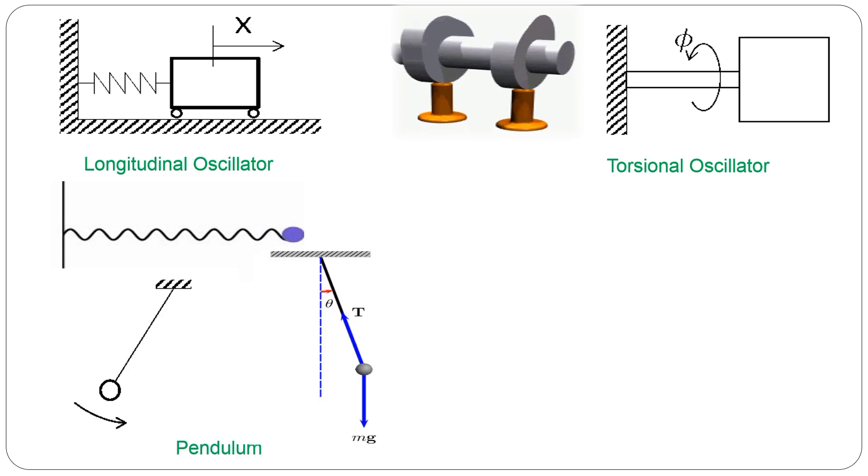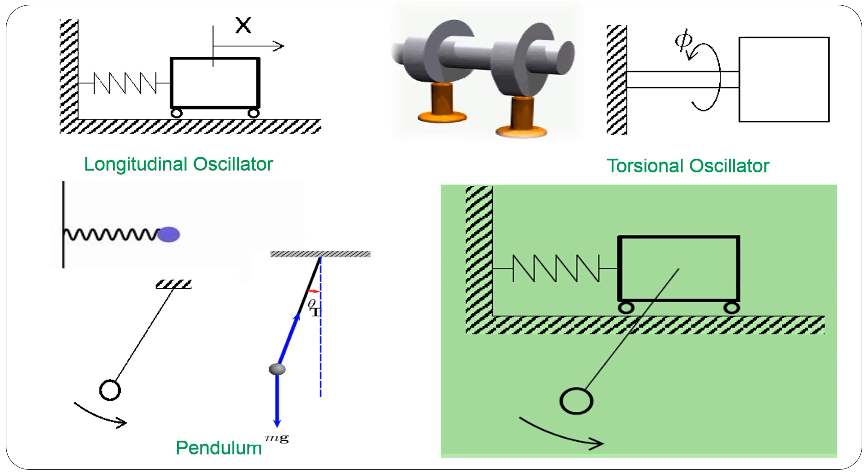Another possibility could be the pendulum. It is another type of oscillator which oscillates not due to the existence of a spring, but due to the existence of a gravity force. And of course, we can also think of possible combinations. In the case that you see here in the picture, we have the combination of the pendulum and the longitudinal oscillator.